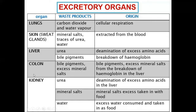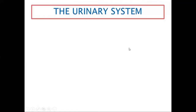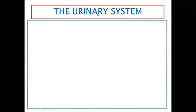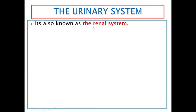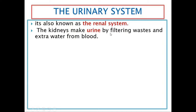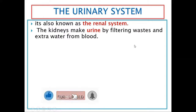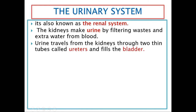The urinary system, sometimes also known as the renal system — 'renal' referring to things related to the kidney — works by filtering wastes and extra water from the blood. The wastes remain in the urine, and extra water from the blood is also included, so urine is made up of wastes and extra water from the blood. Urine travels from the kidneys through two thin tubes called ureters to fill the bladder.